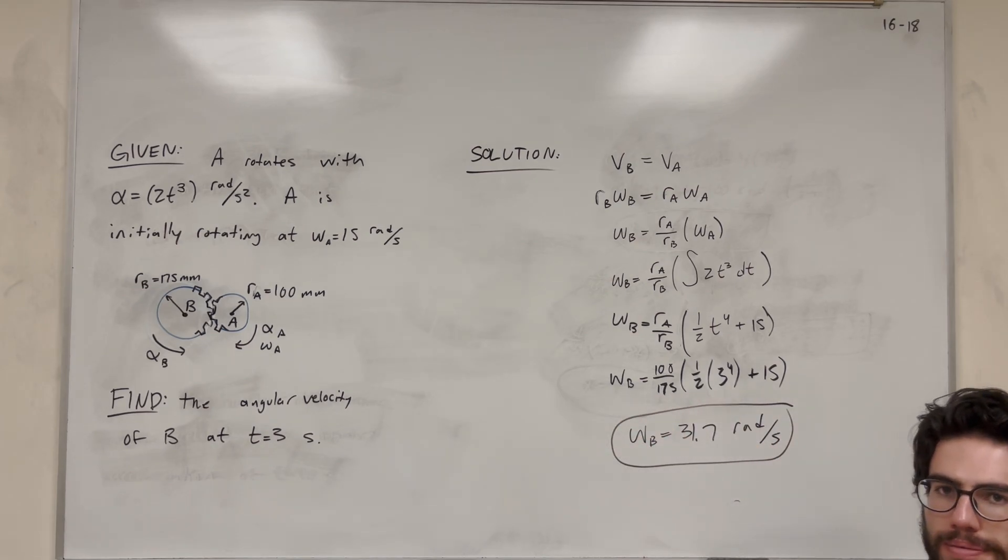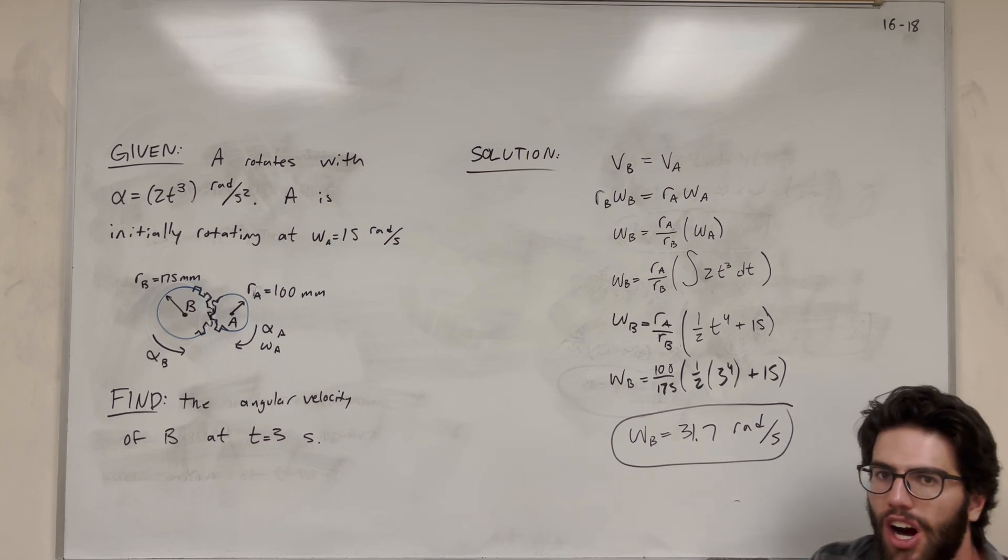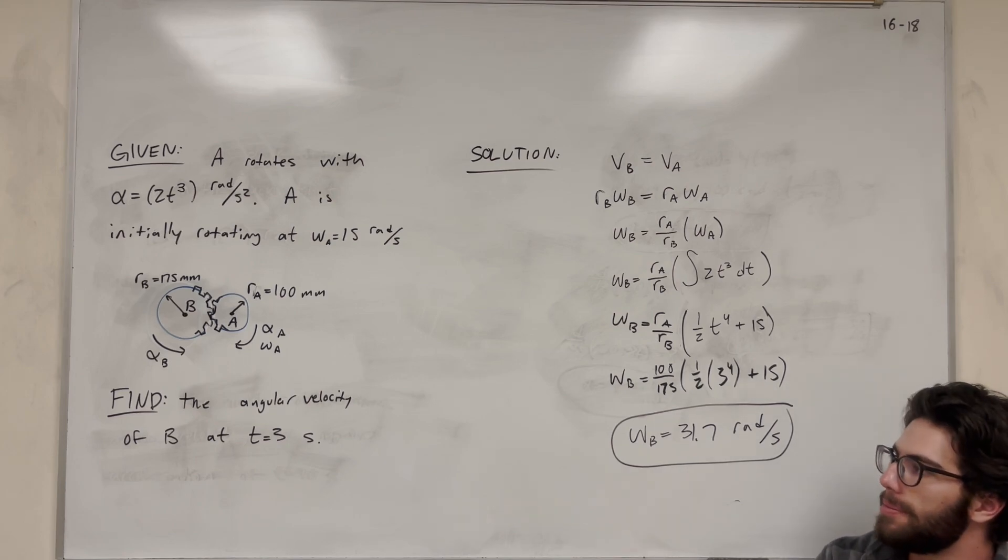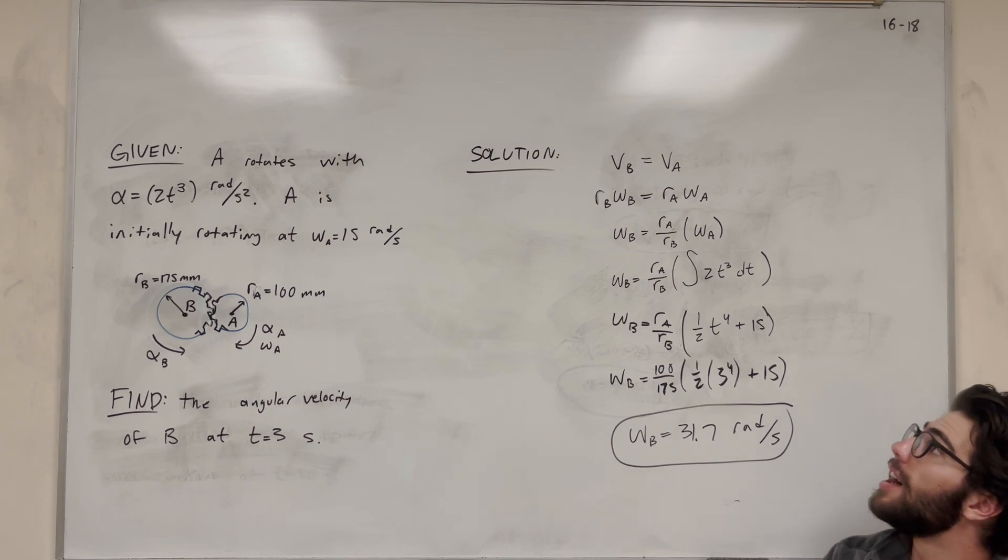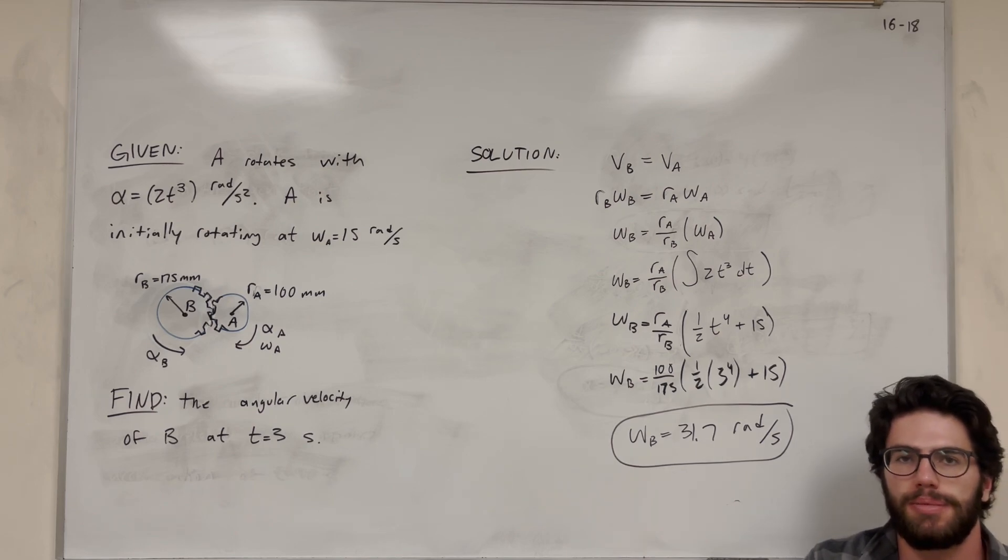So then you're going to get that our angular velocity of B is 31.7 rad/s. And there you go, we solved the problem. Pretty cool question, just kind of a concept question. Not really a lot of math involved, but it's about understanding the problem. So if you're still struggling with this angular stuff, feel free to check out my channel. I have a whole bunch of videos on the topic. Thanks for watching, and I'll see you in the next one. Peace.